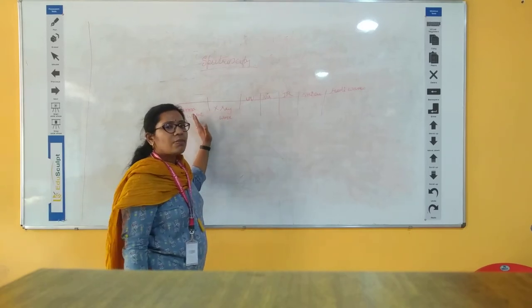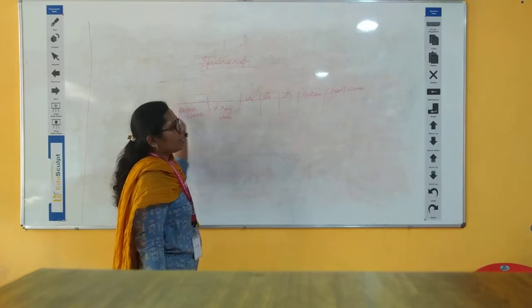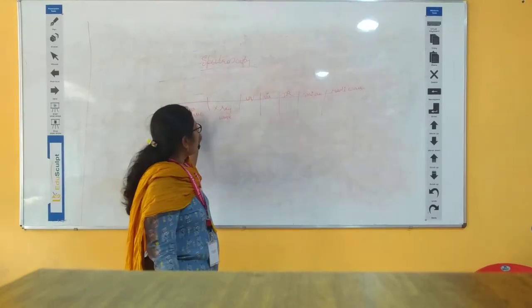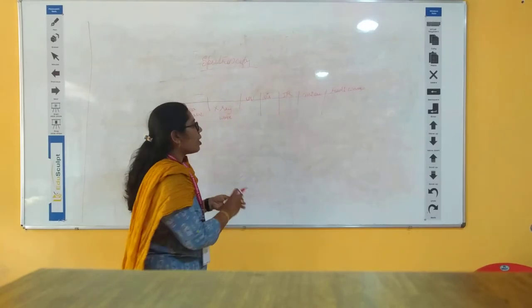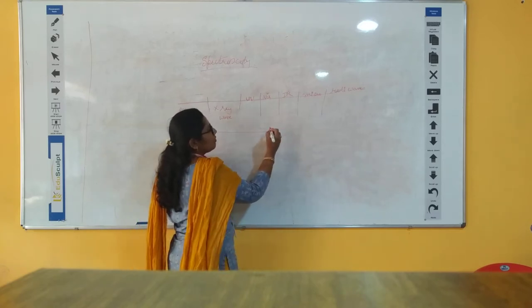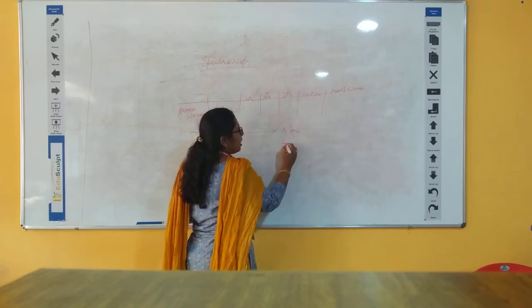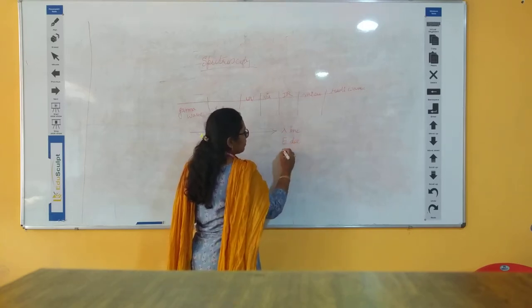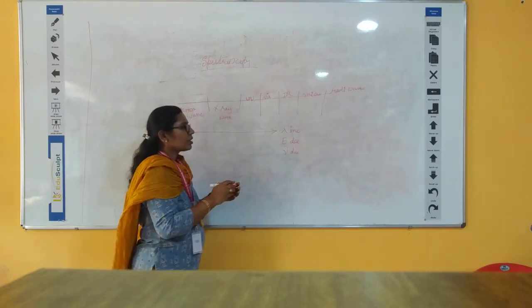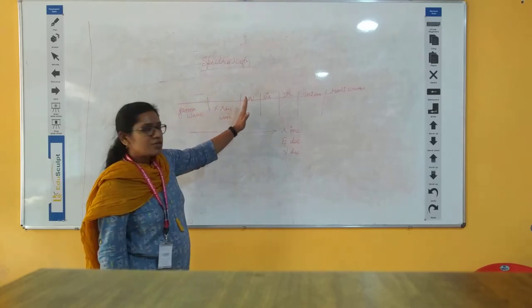As you go from gamma radiation to radio waves, the energy decreases, the frequency also decreases, and the wavelength increases.